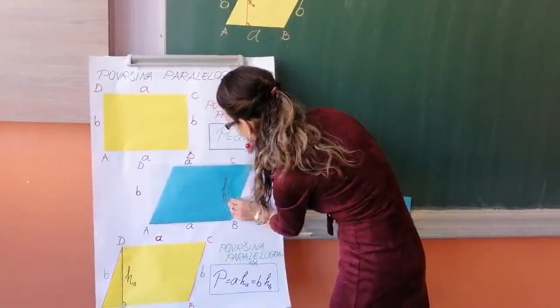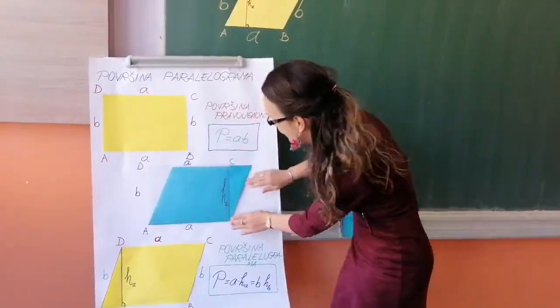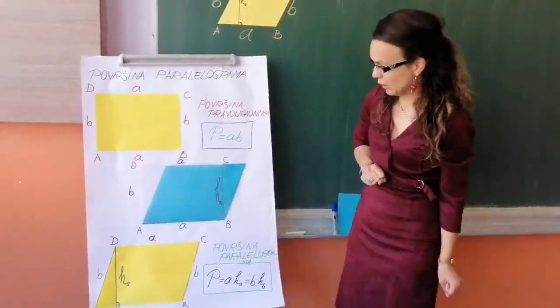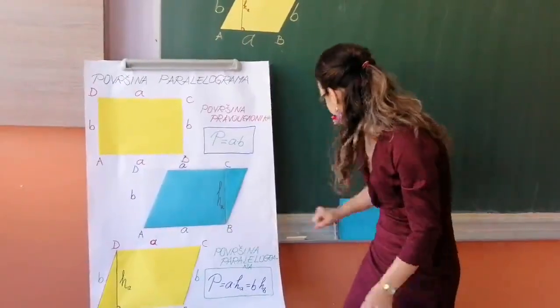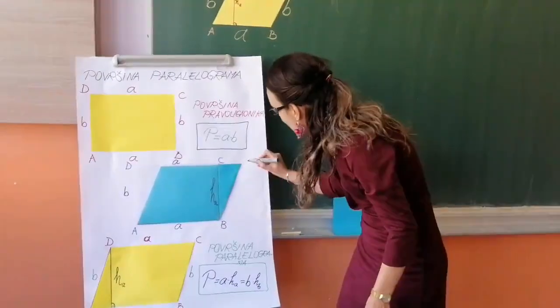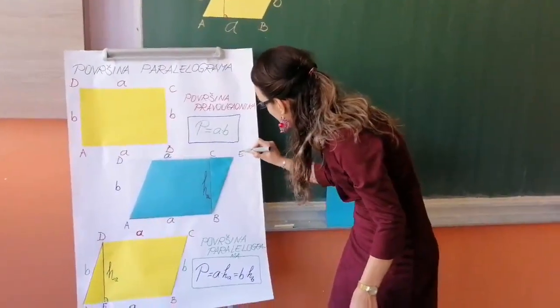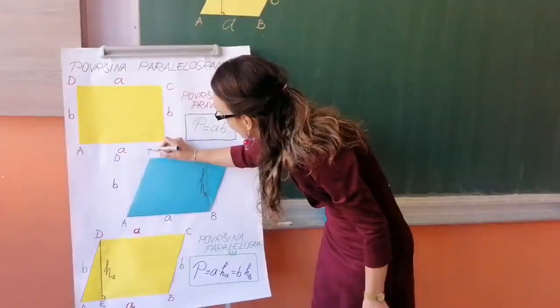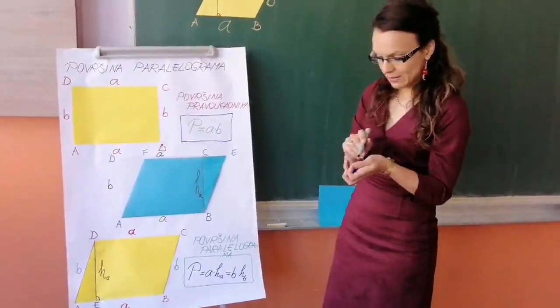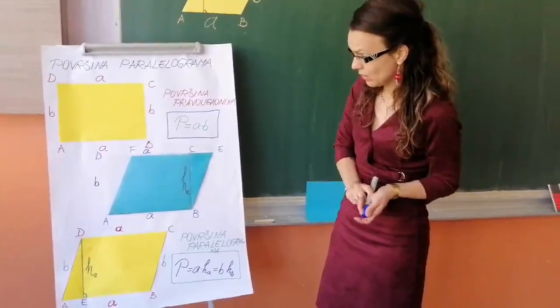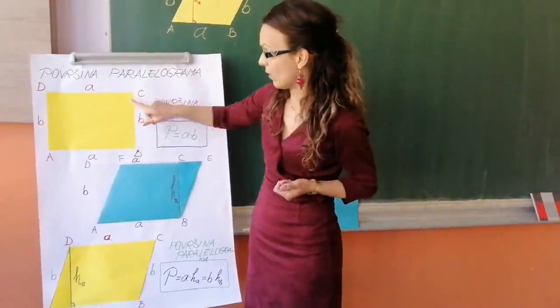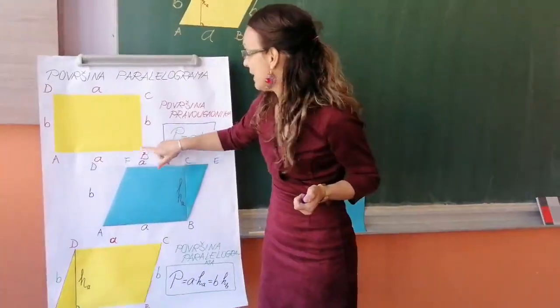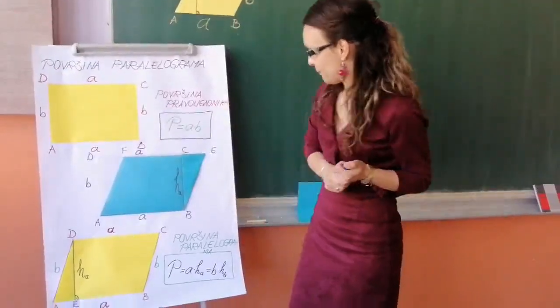Ja ću u stvari dobiti paralelogram A, B, E, F, koji će imati istu površinu kao i moj pravougaonik A, B, C, D.